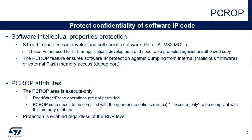PC-ROP means proprietary code readout protection. Third parties may develop and sell specific software IPs for STM32 microcontrollers, and original equipment manufacturers may use them when developing their own application code. In order to protect the software intellectual property, the code must not be copied or read. The PC-ROP's purpose is to protect the confidentiality of third-party software intellectual property code against malicious users, independent of the RDP level setting. The protected firmware can only be executed by the Cortex-M0+ core. Any other accesses by DMA, debug, and data read, write, and erase are strictly prohibited.